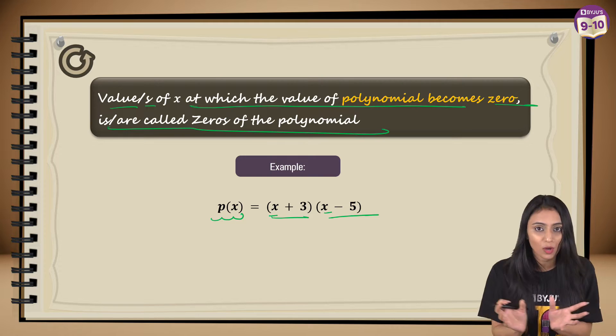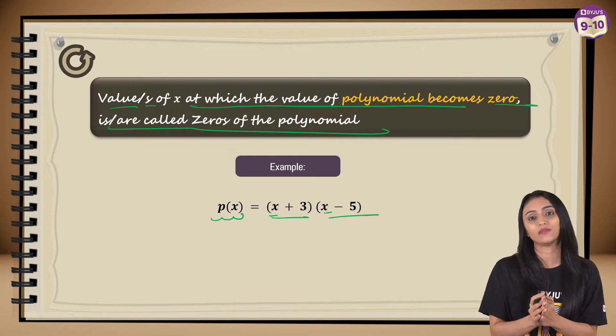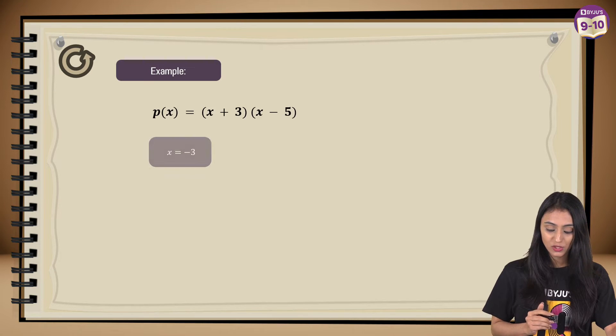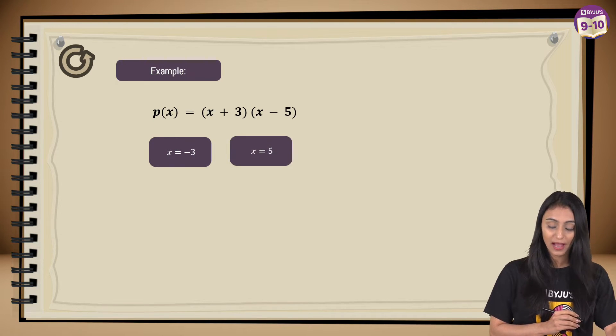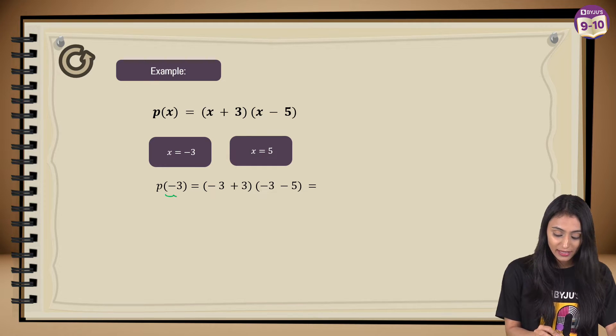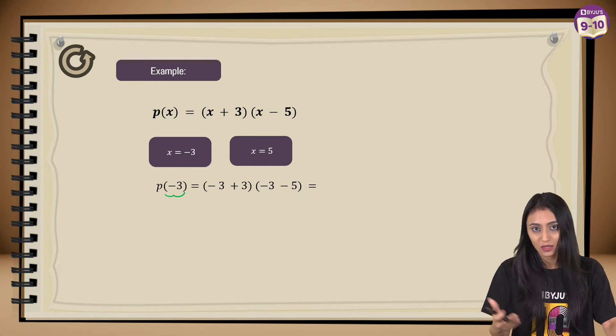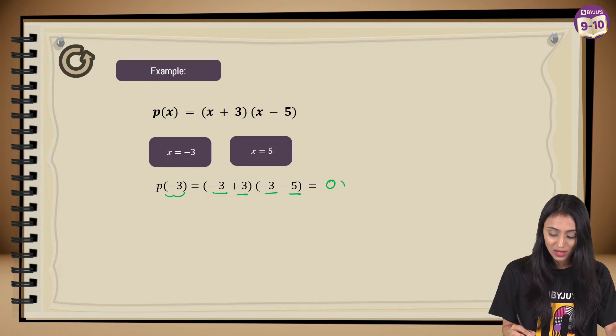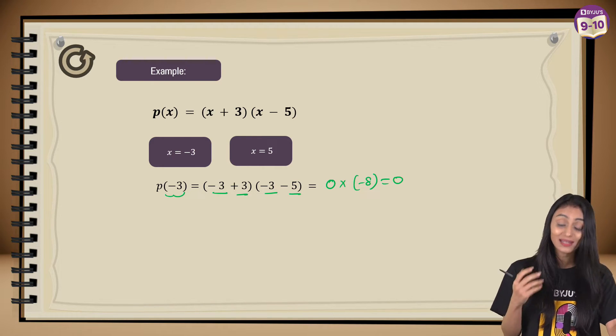I'll call that value the zero of this polynomial. Let's suppose if I substitute x over here as -3. So if I put -3, I replace x with -3 wherever I have got x: that's -3 + 3, -3 - 5. That's going to be what? This is zero, -3 - 5 is going to be what? That's -8. Result is going to be zero only. So I can say that -3 is a zero of this polynomial.